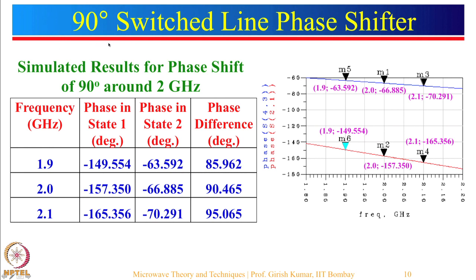Here are the simulated results for phase shift. This phase shifter was designed at around 2 gigahertz for a 90-degree phase shift. The two states show different S21 phase response plots; at 1.92 and 2.1 gigahertz we obtained differential phase shifts of 85, 90, and 95 degrees. Around 2 gigahertz the phase shift obtained is around 90 degrees. There is one disadvantage: as frequency changes, the phase shift also changes because theta equals beta times L — L is fixed but beta equals 2 pi by lambda changes with frequency.